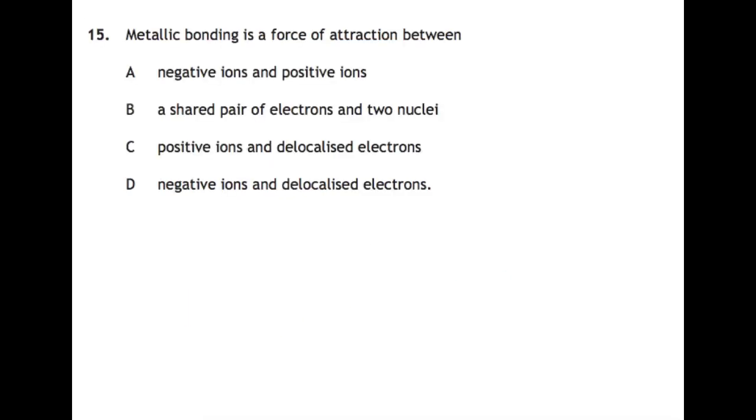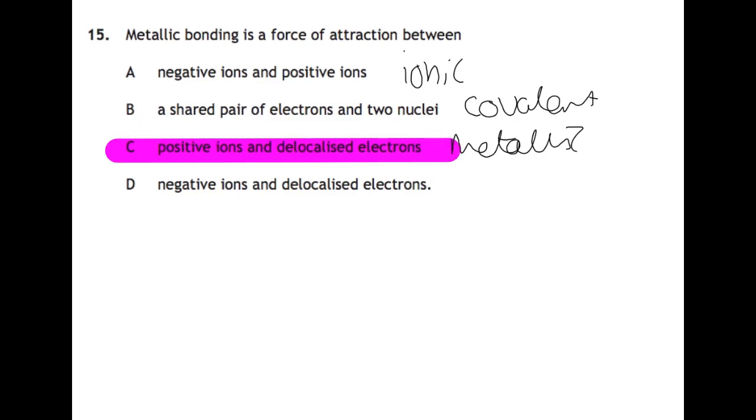Question fifteen: metallic bonding is a force of attraction between what? Negative and positive ions would be ionic. A shared pair of electrons and two nuclei would be covalent. Positive ions and delocalised electrons is metallic. And negative ions and delocalised electrons doesn't happen. So our answer is C.